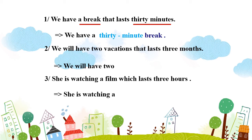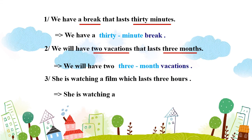Câu số 2: "We will have 2 vacations that last 3 months." – Chúng ta sẽ có 2 kỳ nghỉ kéo dài 3 tháng. Ở đây: 2 vacations – 2 kỳ nghỉ, thời gian là 3 months. Chúng ta sẽ viết lại: "We will have 2 3-month vacations." – Chúng ta sẽ có 2 kỳ nghỉ 3 tháng.